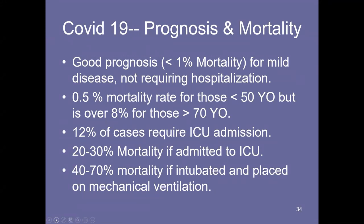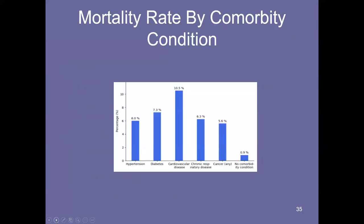Prognosis: with mild disease, good prognosis overall. Less than half a percent mortality for those under 50, but over 8% for those greater than 70 years old — age matters. 12% of cases required ICU admission, 23% mortality if admitted to the ICU, 40 to 70% mortality if placed on a ventilator. Having multiple comorbidities — cardiovascular disease, COPD, etc. — definitely worsened the prognosis.